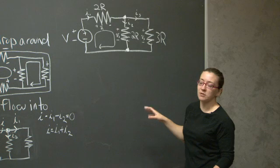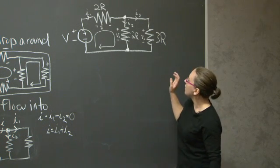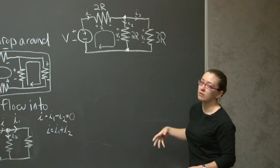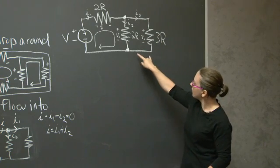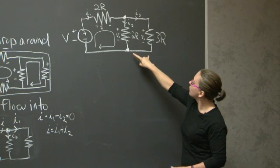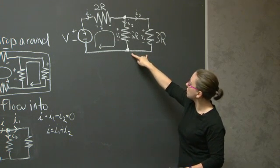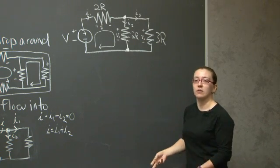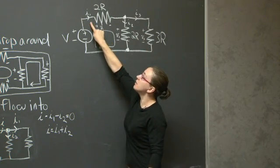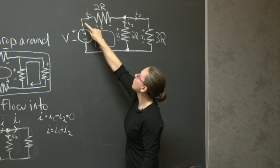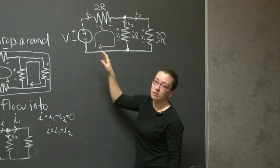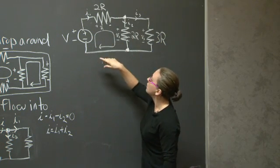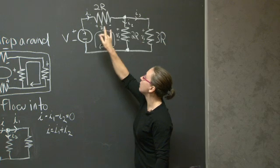The first thing I would do when approaching this problem is attempt to reduce this circuit to something simpler. I'm going to figure out how to change these two resistors in parallel into a single equivalent resistor. That will allow me to solve for I1 because there will be zero nodes in the system — just one single loop — and the current through the system will just be V over R.